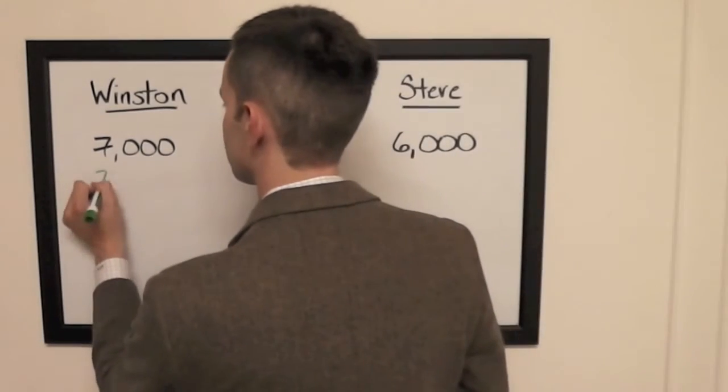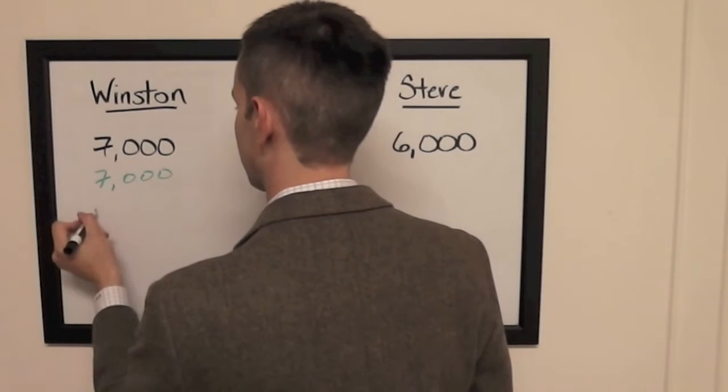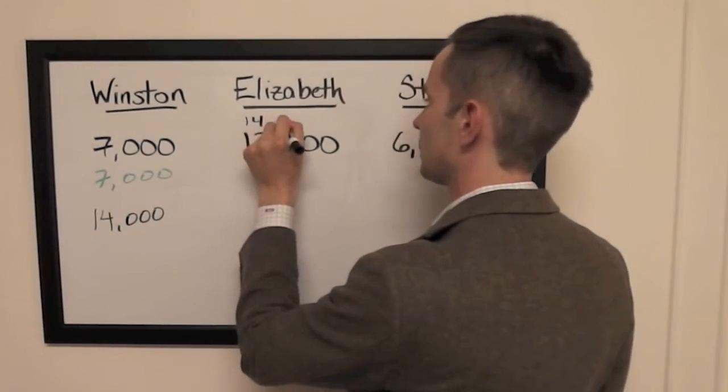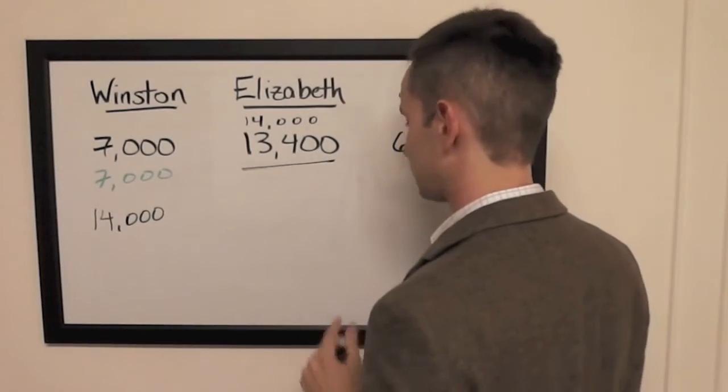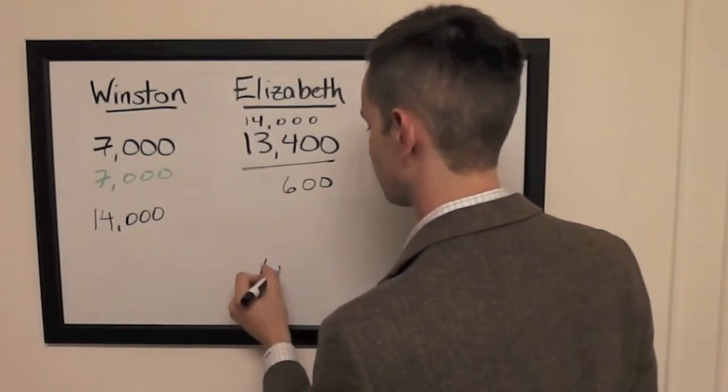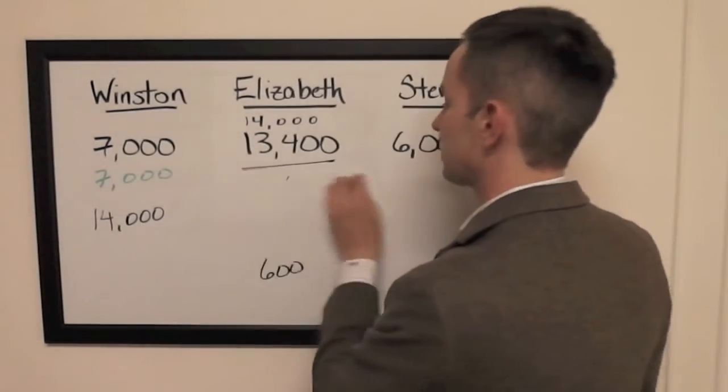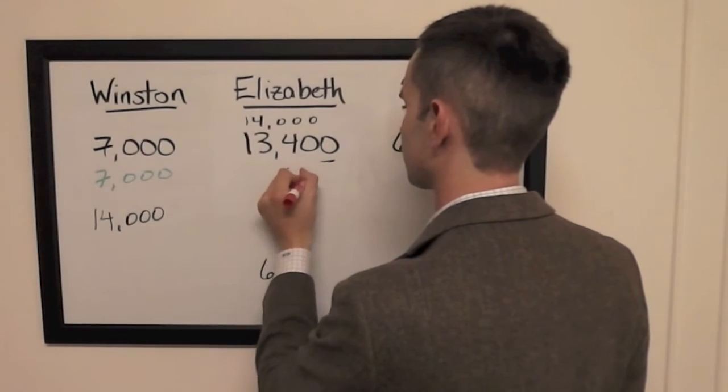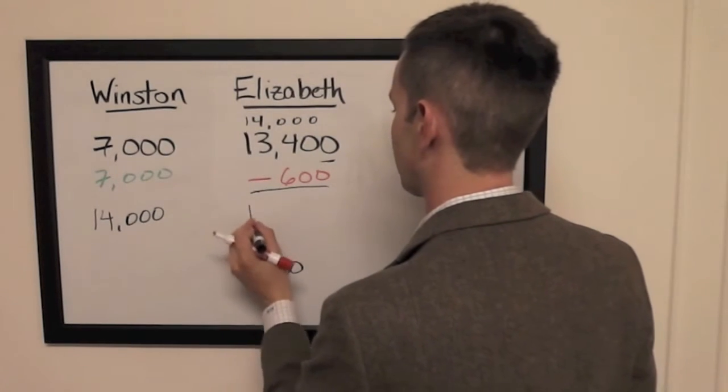If Winston doubles up, he's going to have 14,000. So to cover that, Elizabeth's going to need to wager 600. And if she gets it wrong with that wager, and I'll put this in red, she's going to be left with 12,800.